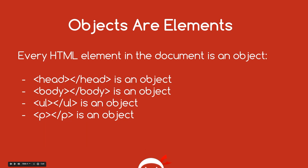The next component is the object. In HTML, pretty much every element within your document is an object. That means the head tag is an object, the body tag is an object, the ul tag is an object, the p tag is an object, a tags, span tags, div tags - any tag in your HTML document is an object in the eyes of the DOM. And we know that JavaScript works very well with objects - we can call methods on objects, we can call properties on objects. So we can use those objects in HTML, all those tags, to call methods on them, to change them, delete them, add to them, etc.